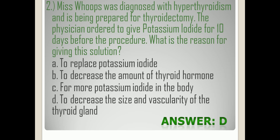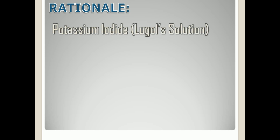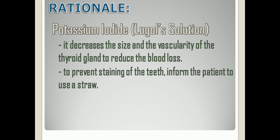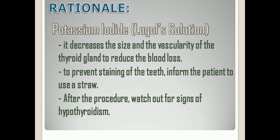The correct answer is letter D. Rationale: Potassium iodide is also known as Lugol's solution. This solution is given as a pre-op preparation for a patient who will undergo a thyroidectomy because it decreases the size and the vascularity of the thyroid gland. This is to reduce blood loss during the procedure. To prevent staining of the teeth, inform the patient to use a straw. After the procedure, watch out for signs of hypothyroidism.